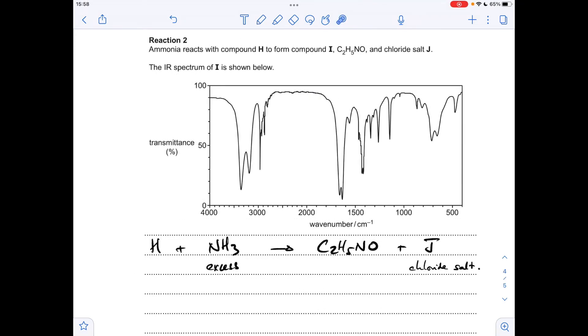Moving on to reaction 2, H reacts with excess ammonia to form compound I with molecular formula C2H5NO and chloride salt J. Starting with the infrared spectrum for I, there's a couple key peaks giving us clues. This one is due to C double bond O. The other key absorption is due to NH bonds. At this point we need to take an educated guess as to which functional group could be in this molecule. The amide group has both the NH bond and C double bond O.